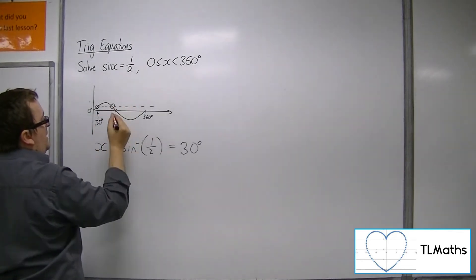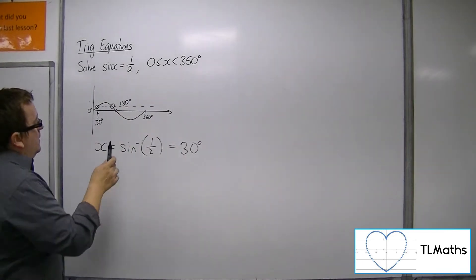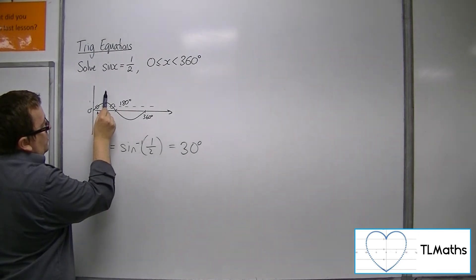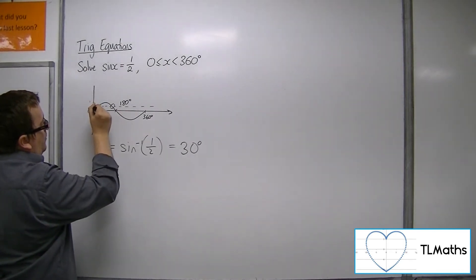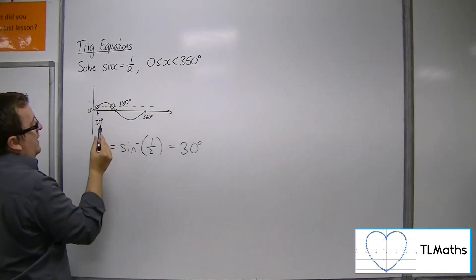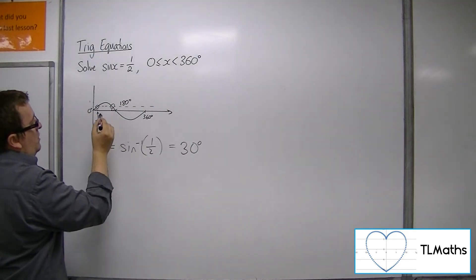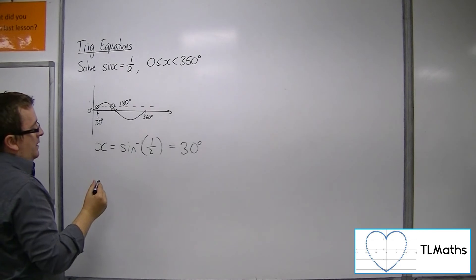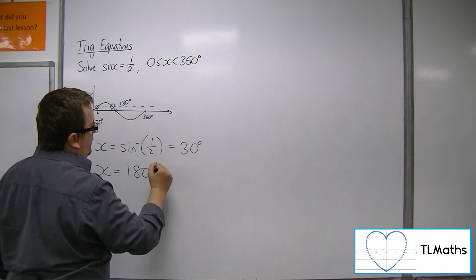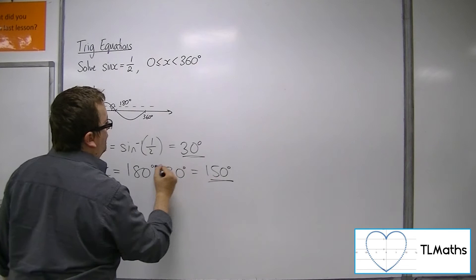Now the second solution, because the graph is symmetric, you can see that the curve is symmetric about 90 degrees. So this part here is precisely the same length as that part there. Because that's 30 degrees away from 0, this is 30 degrees away from 180. So the second solution is found by subtracting 30 degrees from 180. And so the second solution is 150.